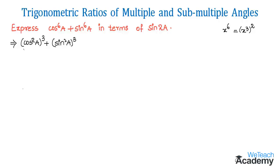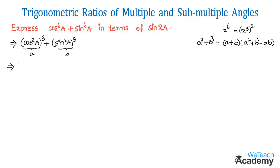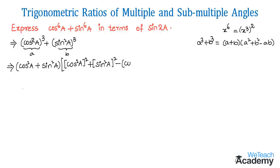Now let us assume cos square a as 'a' and sin square a as 'b'. By observing, this is in the form of a cube plus b cube. Using the formula a³ + b³ = (a + b)(a² + b² − ab), we expand to get (cos²a + sin²a) into (cos⁴a + sin⁴a − cos²a·sin²a).